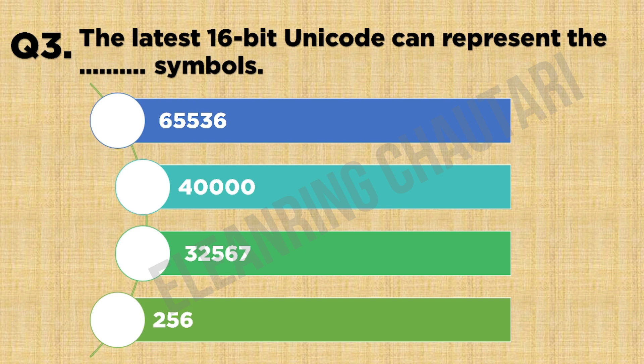The latest 16-bit Unicode can represent symbols. Option A: 65,536. The correct answer is Option A: 65,536.